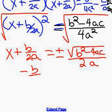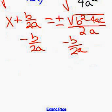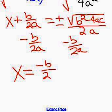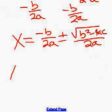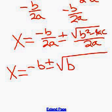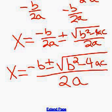Subtract the b over 2a to the right. And so now we're getting close to our formula. x equals negative b over 2a plus or minus the square root of b squared minus 4ac all over 2a. And we're done.